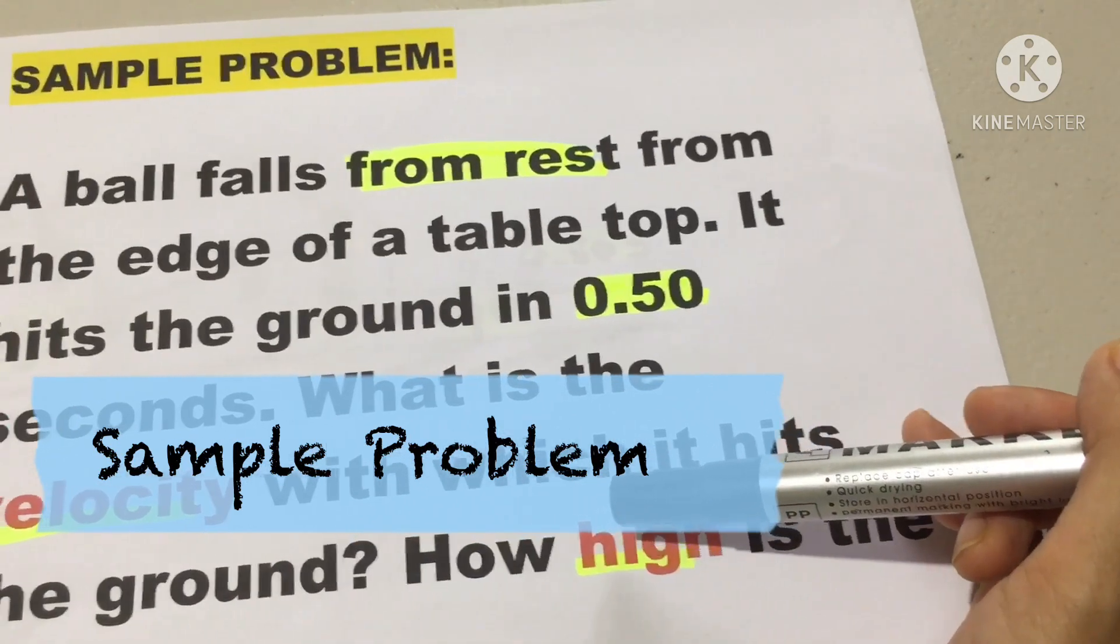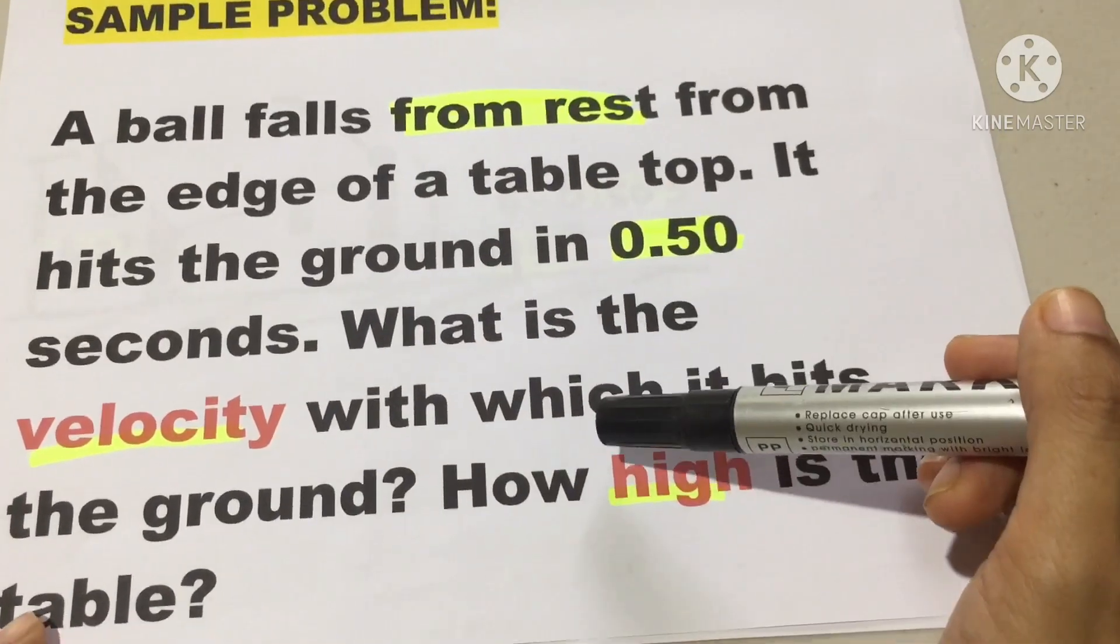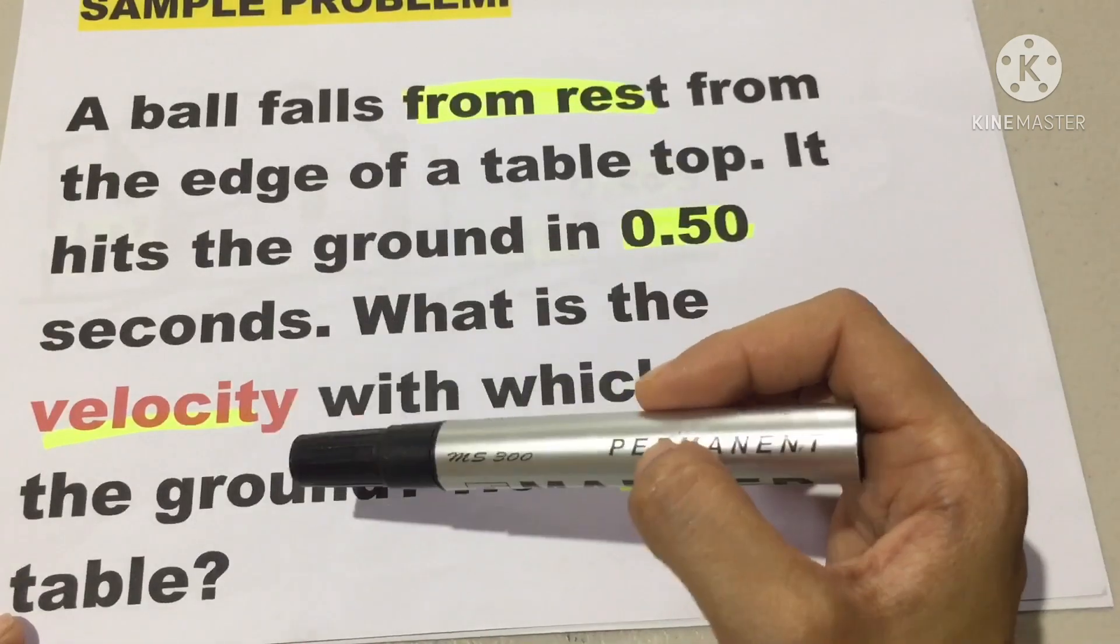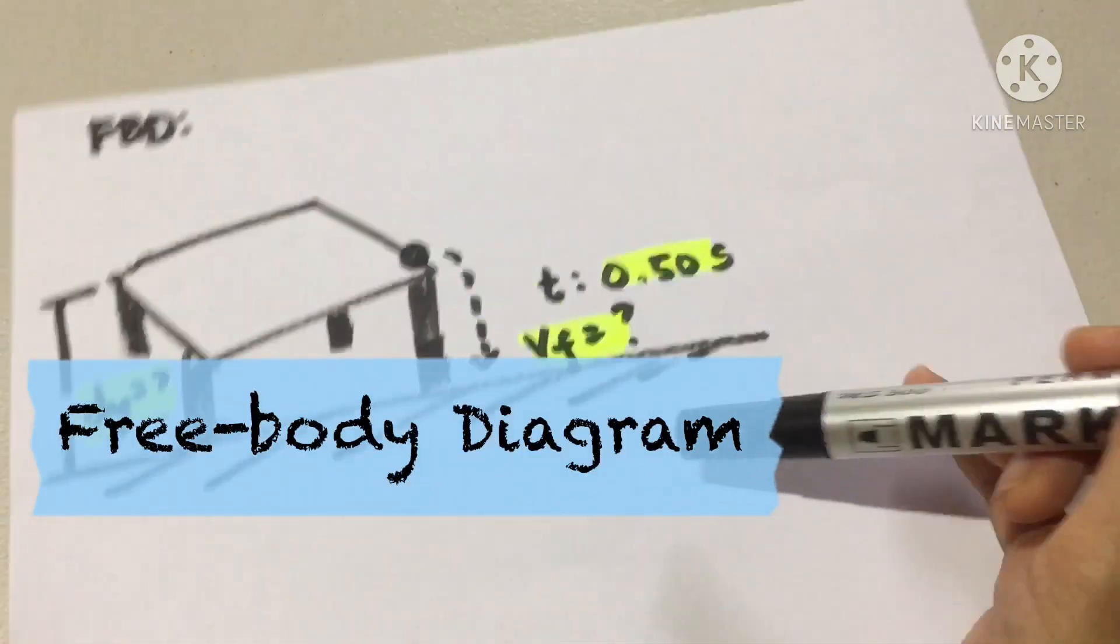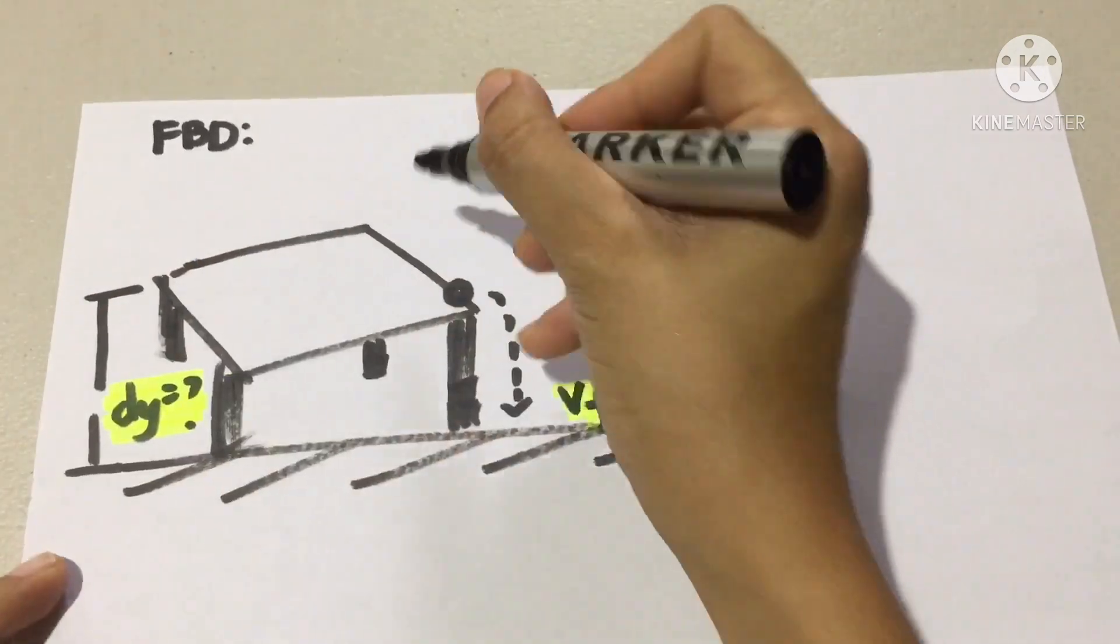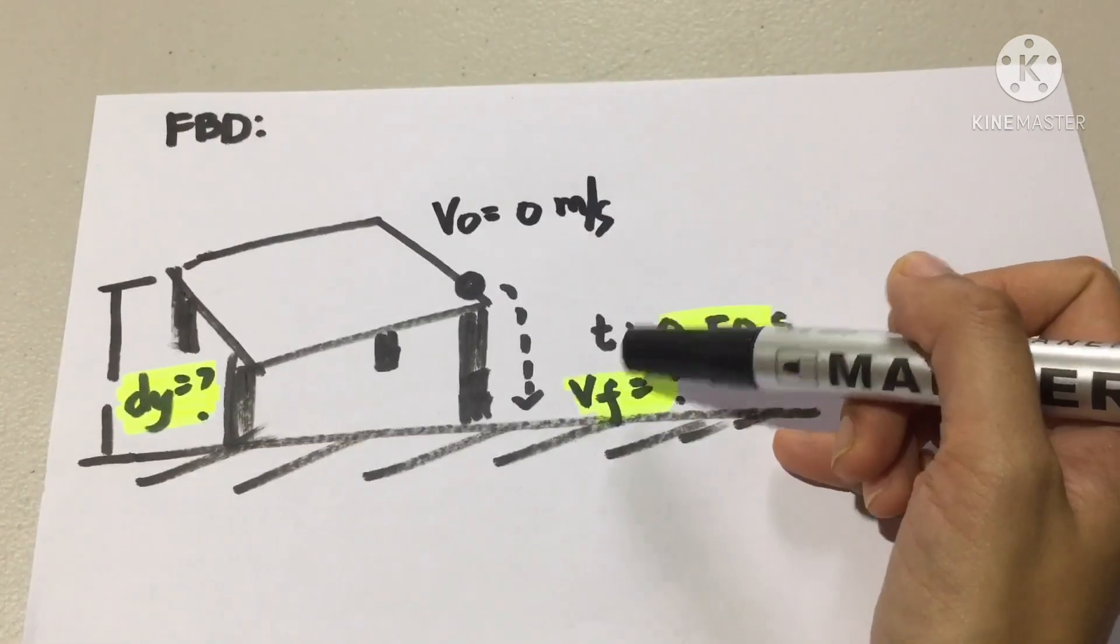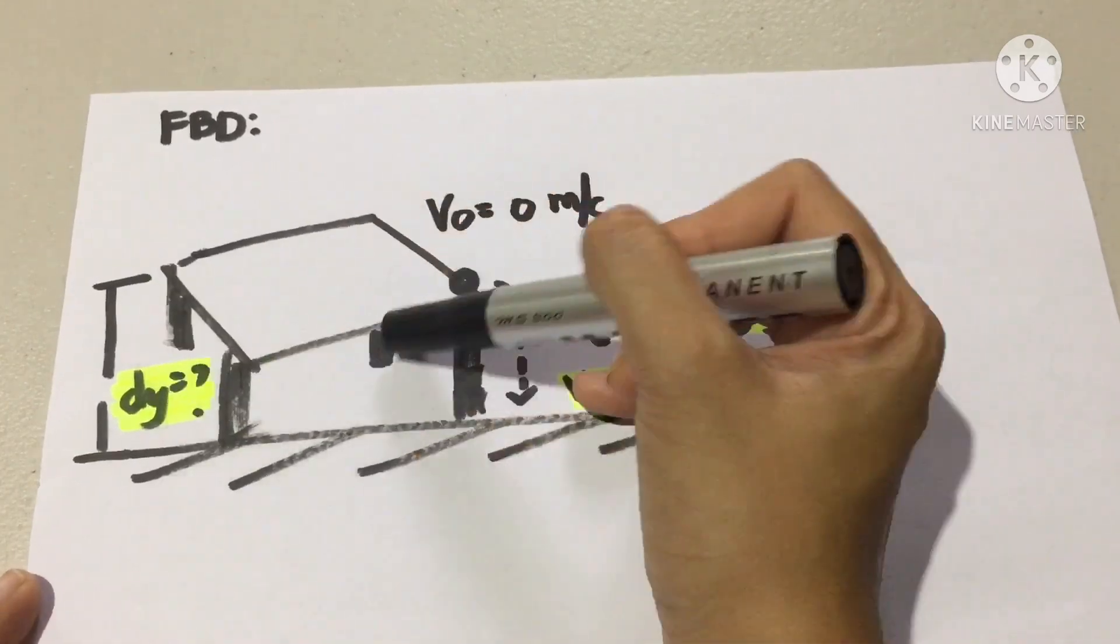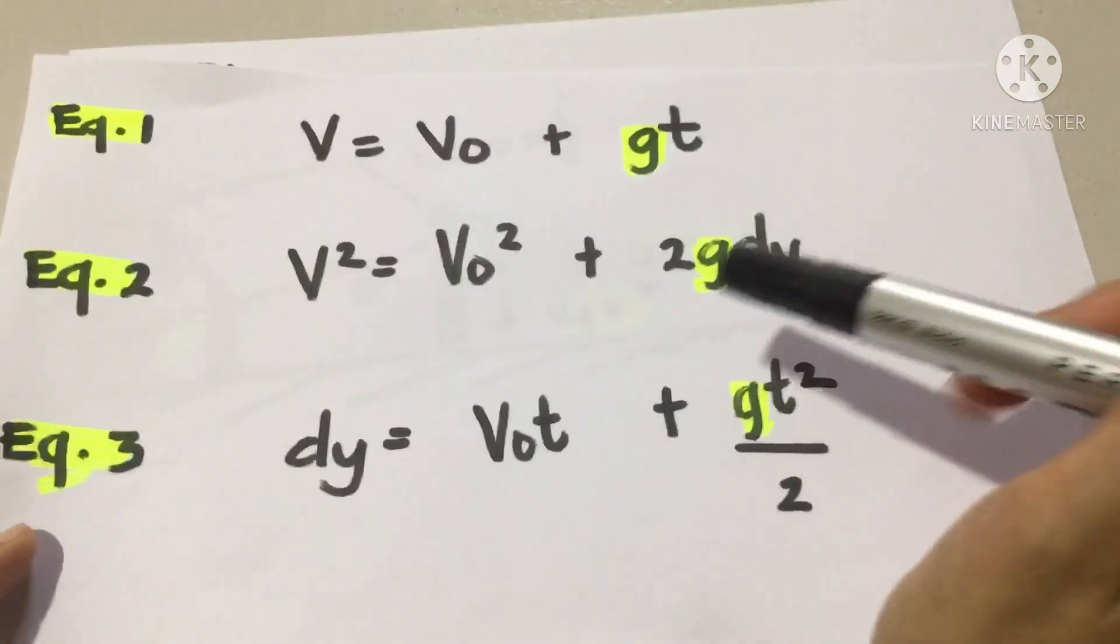So what we have here is an example or a sample problem. A ball falls from rest from the edge of a tabletop. It hits the ground in 0.50 seconds. What is the velocity with which it hits the ground? And how high is the table? So, let's highlight the important data of the problem: from rest, 0.50, velocity, and height. It's easiest if we are going to draw it or sketch a free body diagram. Table, this is our object, a ball. So actually, it is case number 1. In case number 1, initial velocity is equivalent to 0 meters per second.